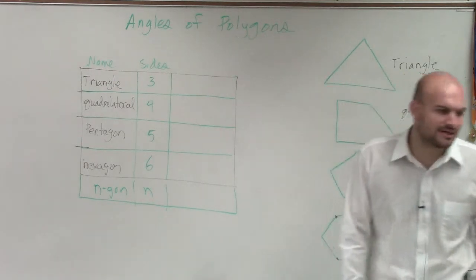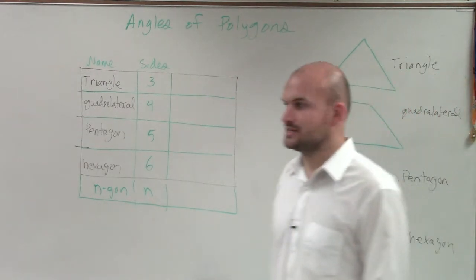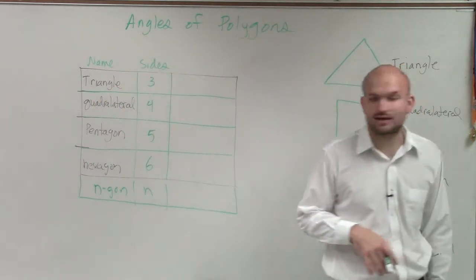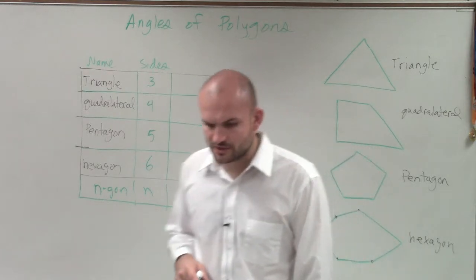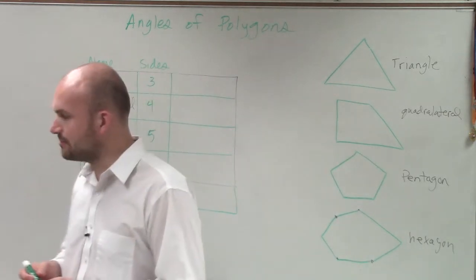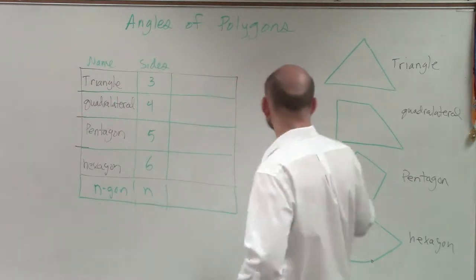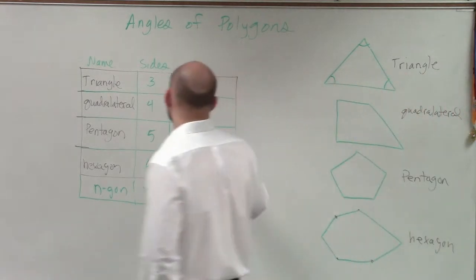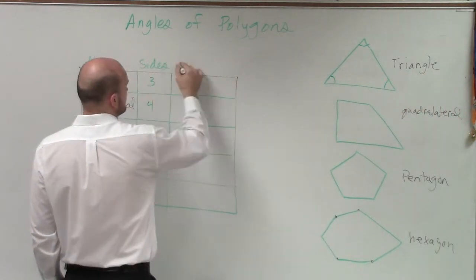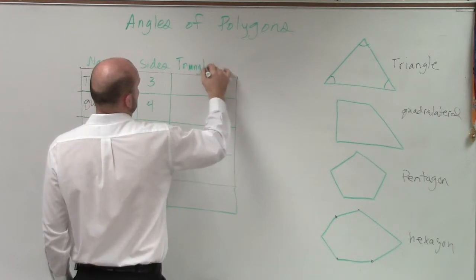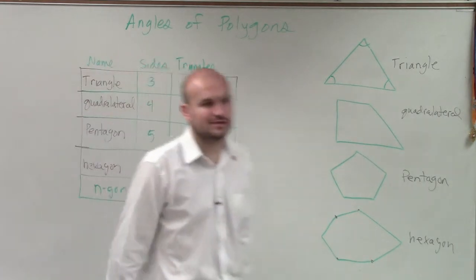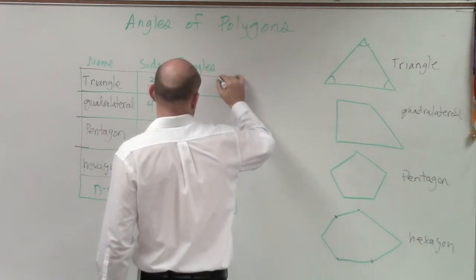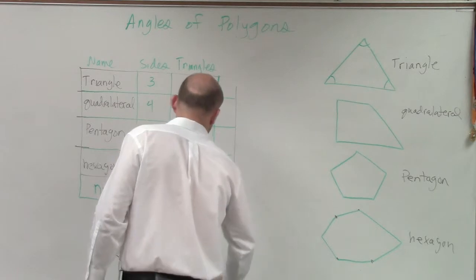So now the next thing I want you guys to go over is let's see if we can remember exactly how many degrees are in a triangle. Taro, do you know how many degrees the sum of all the angles in a triangle adds up to? 180. 180 degrees, right? The sum of all the angles in a triangle adds up to 180 degrees. Now, if you look at a triangle, obviously if we can draw a triangle, then therefore we're going to have, let me actually shorten this box a little bit.